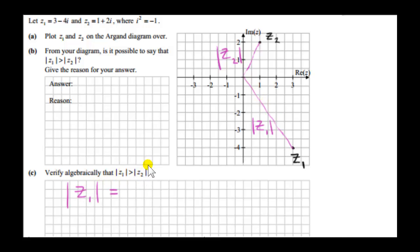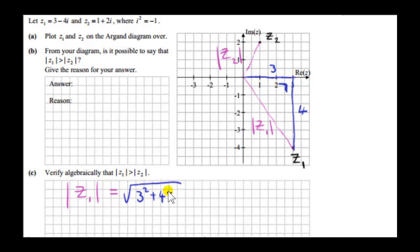Now let's calculate mod Z1 and mod Z2. To get this distance we just use Pythagoras. We can complete a right angle triangle here. This side of the right angle triangle has a length of 4, and this side has a length of 3. So we can see that mod Z1 is just the square root of 3 squared plus 4 squared — that's just Pythagoras' theorem applied to this right angle triangle. We get the sum of the squares of the two short sides and take the square root. This gives us root 25, which is 5.